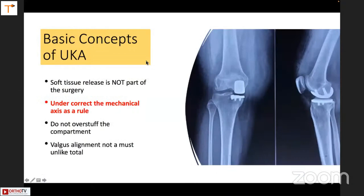We should not miss the basic concepts of UKA: soft tissue release is not part of the surgery. Under-correct the mechanical alignment, do not over-stuff, and valgus correction element is not a must as in TKR.